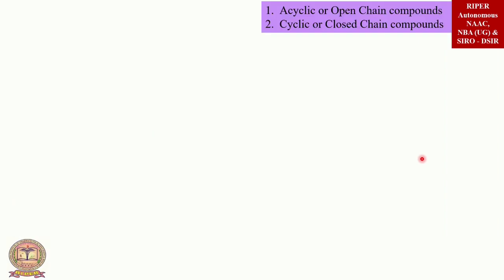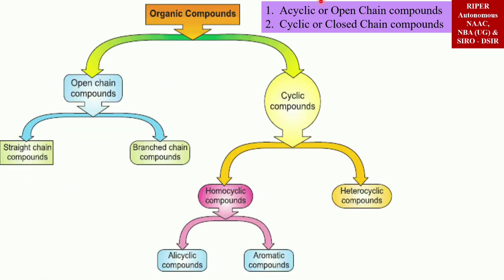It is my first lecture here. Depending upon the arrangement of the carbon atoms in their structure, organic compounds are broadly categorized into two types: acyclic or open chain compounds, and cyclic or closed chain compounds. The acyclic or open chain compounds are further categorized into two types: straight chain compounds and branched chain compounds.